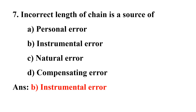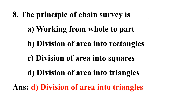Seventh question: Incorrect length of chain is a source of? Option A: personal error, Option B: instrumental error, Option C: natural error, Option D: common setting error. The answer is instrumental error — incorrect length of chain is a source of instrumental error.